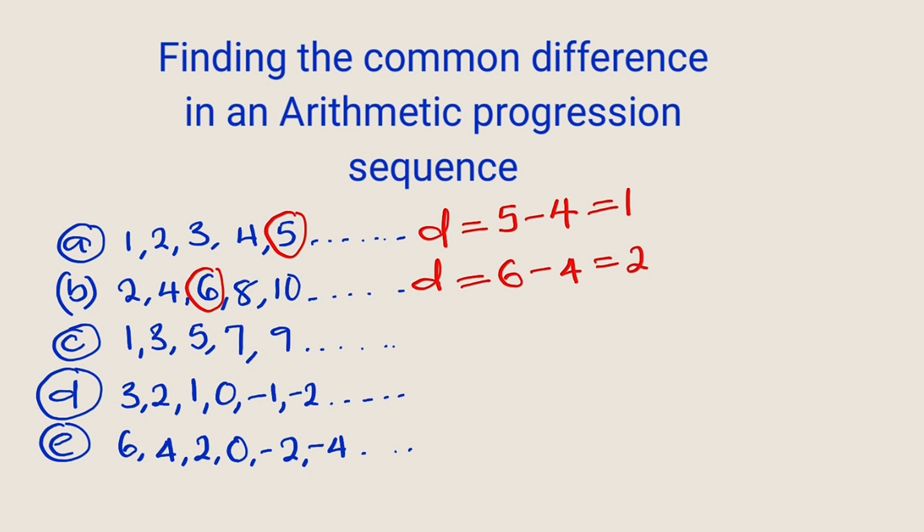Moving on to the third one, the common difference can be obtained. Let us use this three. We have three as our upper bound minus one, and this is equal to two, and this is true for all terms.